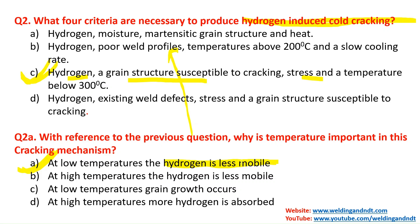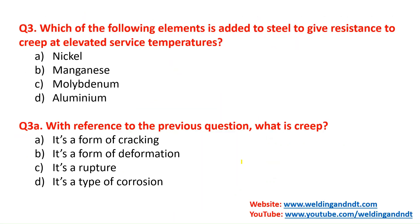Question number three: which of the following elements is added to steel to give resistance to creep at elevated service temperature? The answer is molybdenum. Molybdenum is added to steel to give higher resistance to creep at elevated temperature service. The follow-up question asks what creep is — essentially asking for its definition.